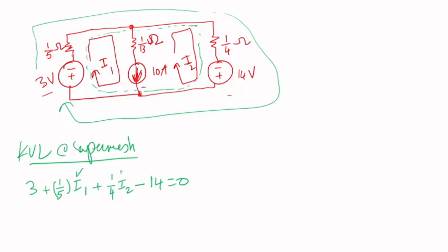So I get this equation here. So I have I₁ and I₂, so I have two unknown variables. I need another equation in order to solve this, another equation written in terms of at least one of them, or in terms of I₁ and I₂.